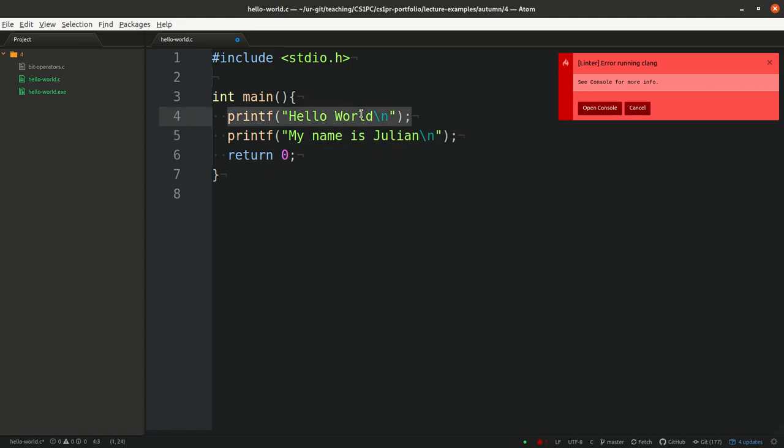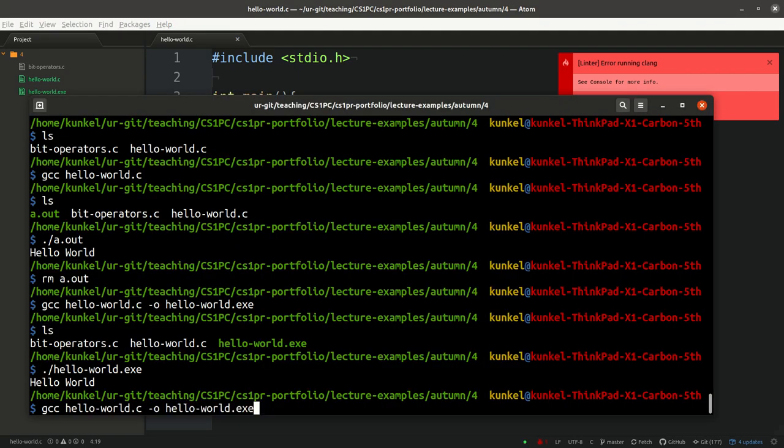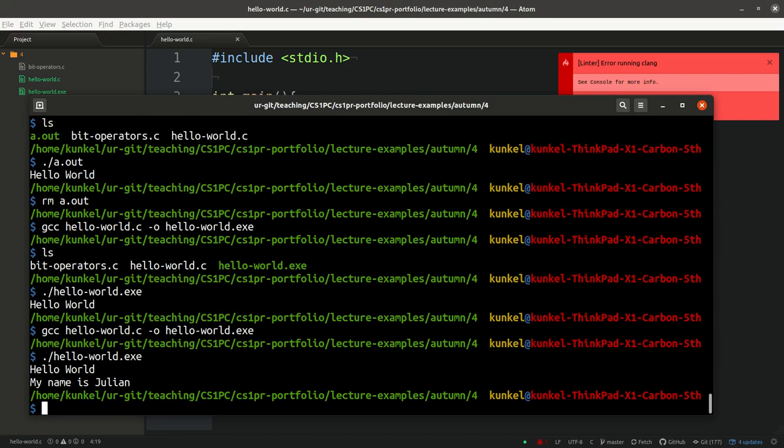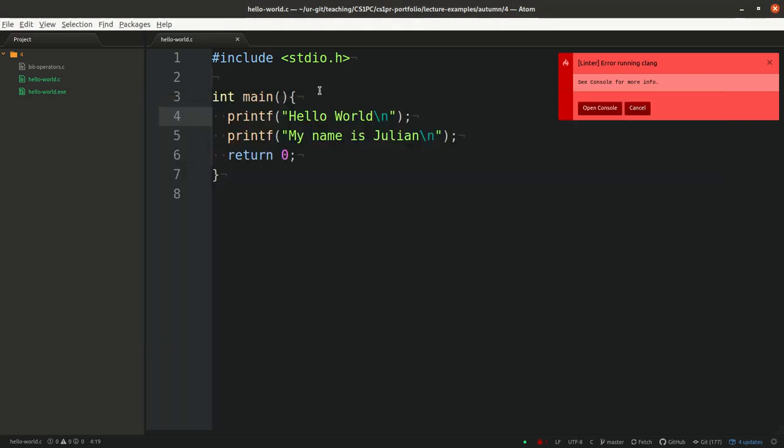So first this instruction over here will be executed. And the compiler knows where the instruction ends with the semicolon, which you should not forget. And then it will execute this command. So I suppose think a moment. What does this code now print when I compile and run it? I will compile it now. So think what does it print? Well, yes, it prints Hello world. And my name is Julian because that's what we encoded here.